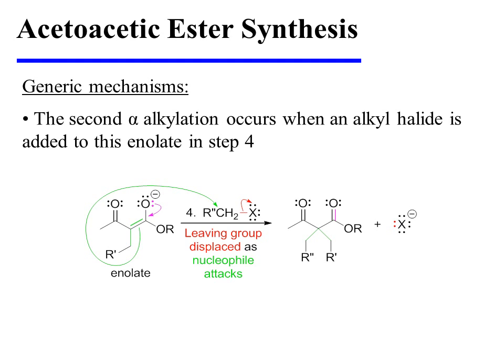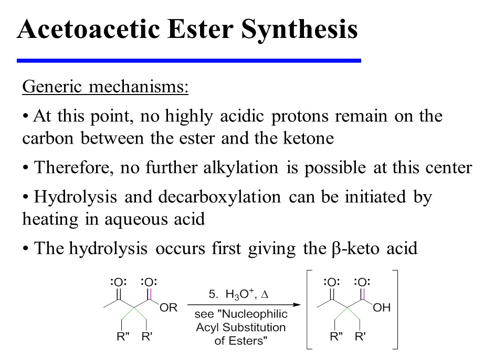A second alpha-alkylation occurs when an alkyl halide is added to this enolate in step 4 of the reaction. At this point, no highly acidic protons remain on the carbon between the ester and the ketone. Therefore, no further alkylation is possible at this center.